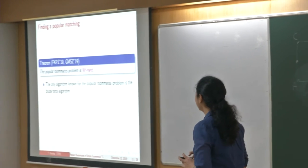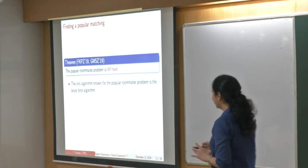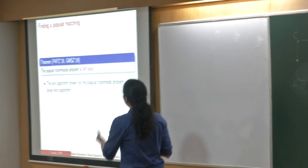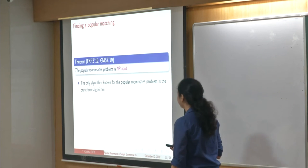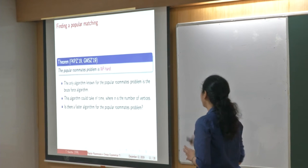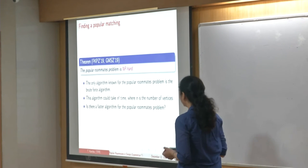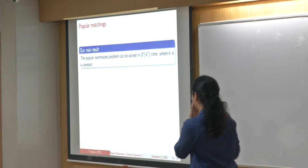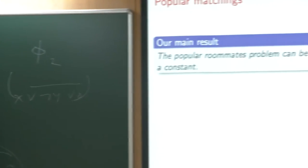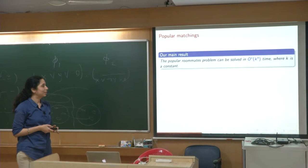Let's take inspiration from the vast literature on fast exponential time algorithms for hard problems — we saw several such results in Sanjay's talk earlier. The only algorithm we know to solve this problem is the brute force algorithm that enumerates all matchings in the given graph, which could take n factorial time. Is there a faster algorithm for the popular roommates problem? Our main result is that we can do this in simply exponential time: the popular roommates problem can be solved in O*(k^n) time, where k is a constant.